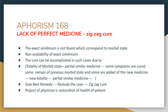Zigzag cure: take the totality, the matching is done only with few symptoms, administer the imperfect medicine, then symptoms will be removed and few original symptoms of the patient plus the symptoms of the medicine administered remain. Take this, form the new totality, and give the second partial similar medicine. This type of cure is called zigzag cure, and the physician's project for restoration of the patient's health is thus achieved.